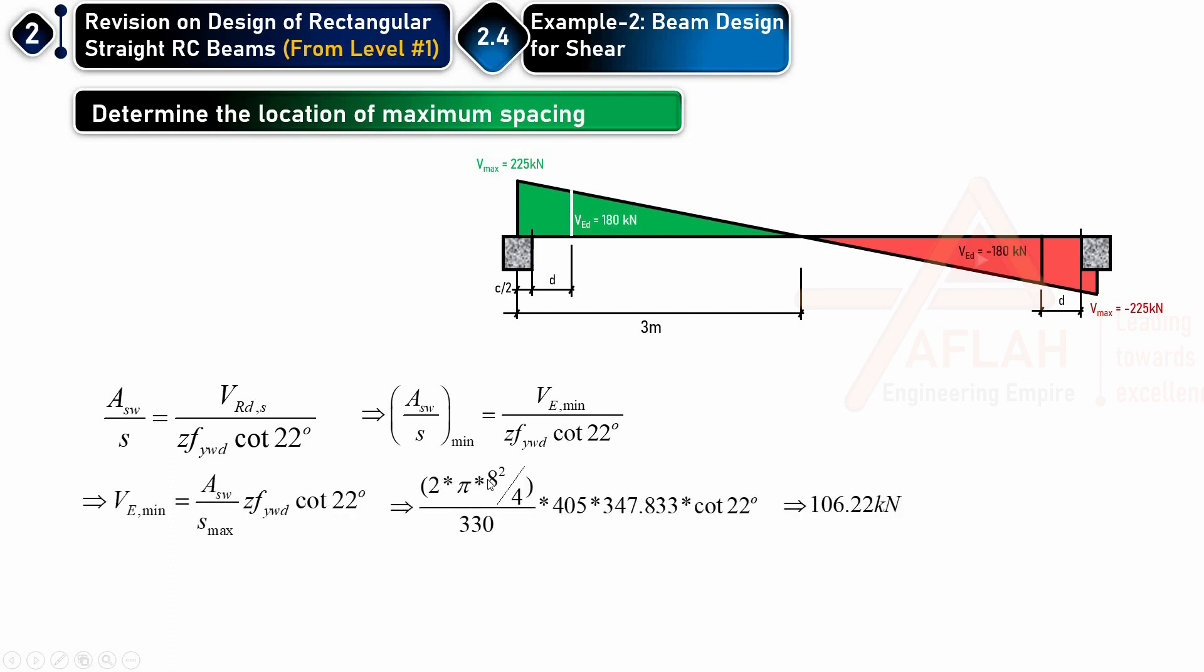The minimum can be by rearranging this. As will be two five eight bars divided by s max is 330, and times this, finally I will get 106.22. Once I get this, I can determine this by similarity of triangle.